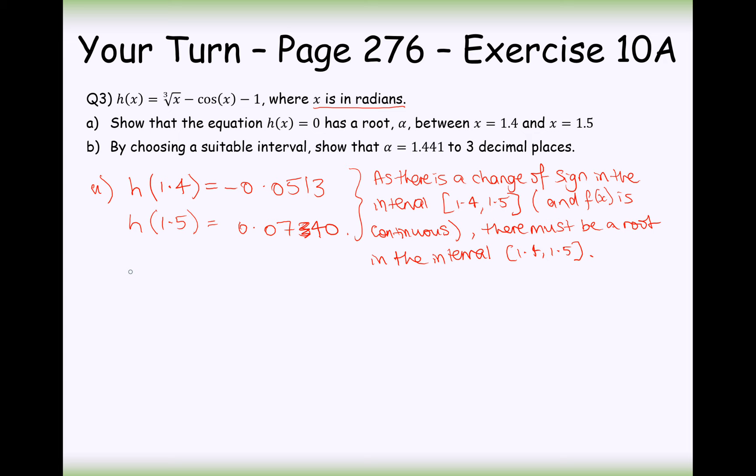Part B, show by choosing a suitable interval, show that alpha equals 1.441 to three decimal places. So I'm going to have to use a suitable interval for this. Now, the upper bounds and the lower bounds here is going to be 1.4405, that will round this number here to three decimal places, and the upper bound is going to be 1.4415, not 1.4415 exactly, but anything less than it is absolutely fine. We could put an equality on this one as well. So this is the interval I'm going to work out my function in between.